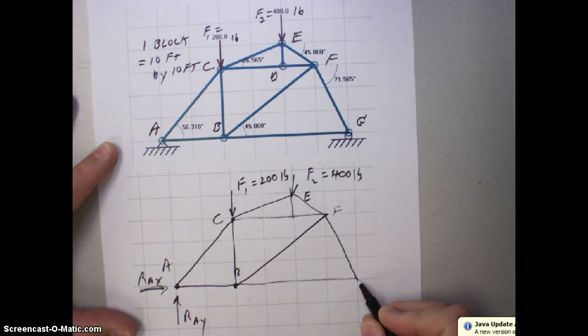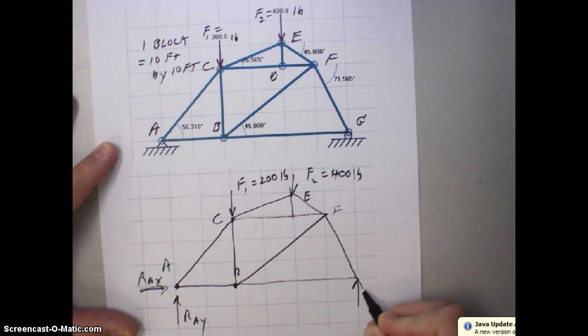And now at the roller here at G, I have one force. I replace that roller with one force and that's RGY. So that is my free body diagram.